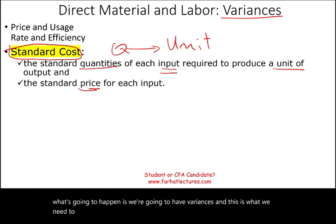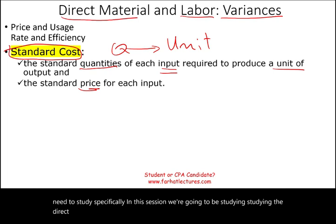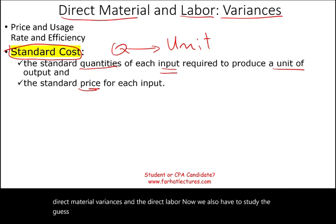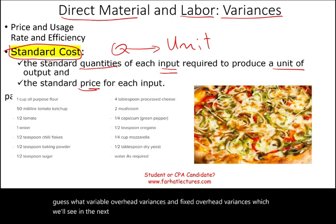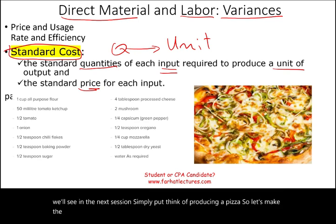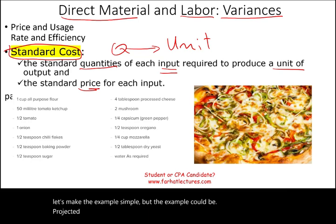Specifically in this session, we're going to be studying direct material variances and direct labor variances. We also have variable overhead variances and fixed overhead variances, which we'll see in the next session. To make the example simple, think of producing a pizza — but this example could be projected or amplified for any unit you are producing.